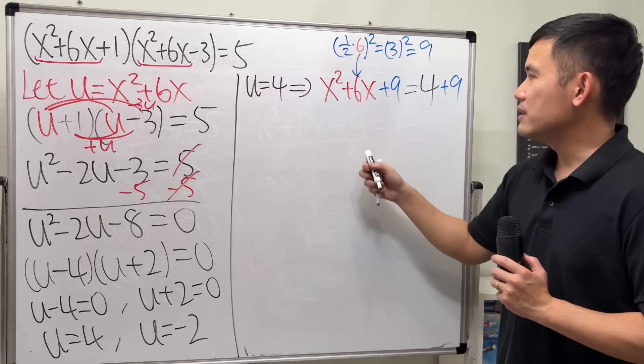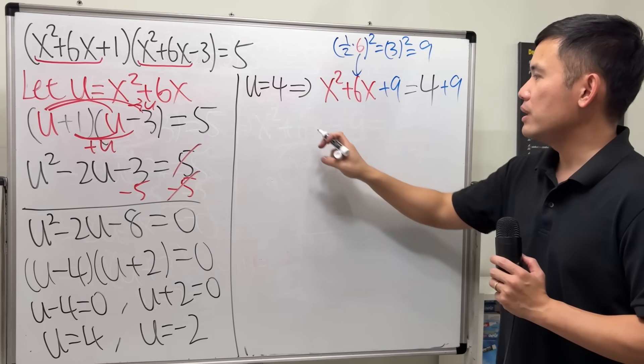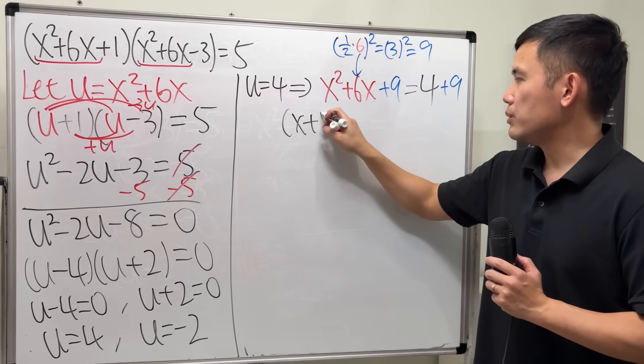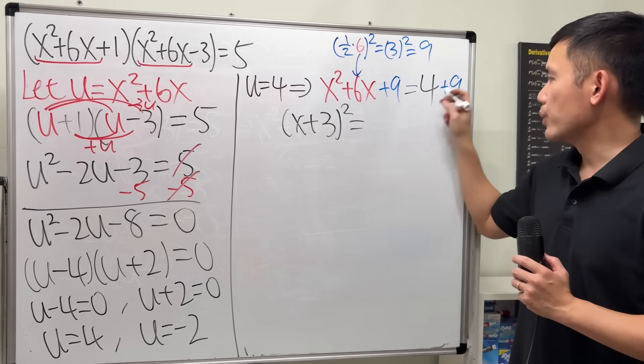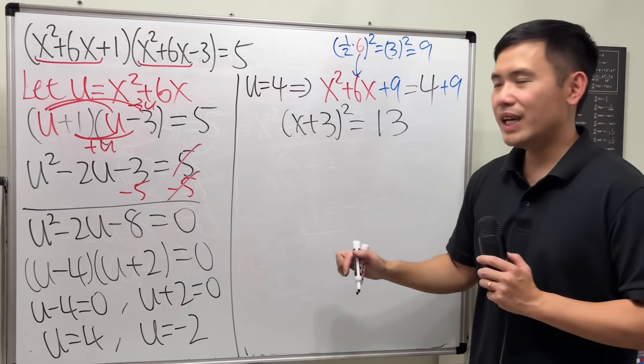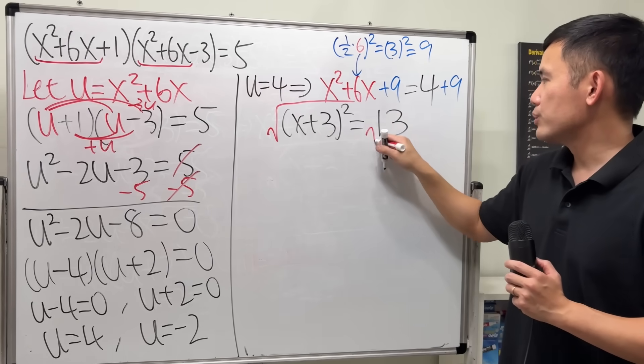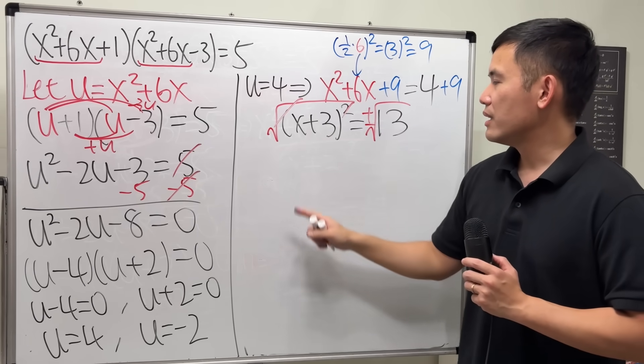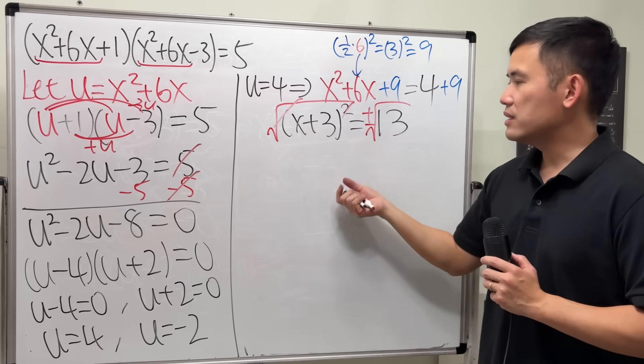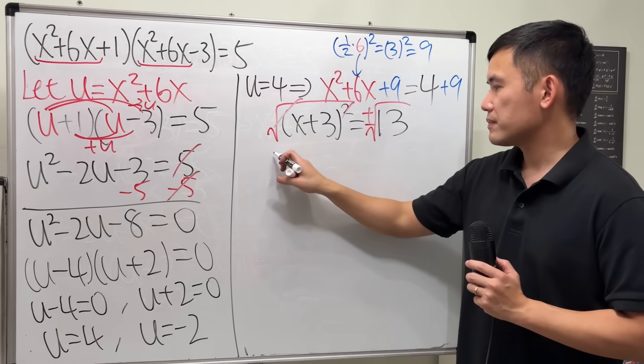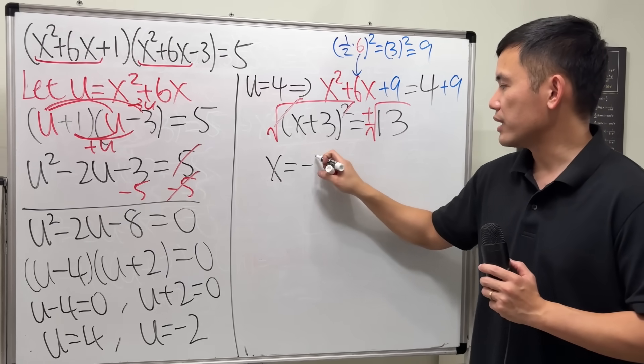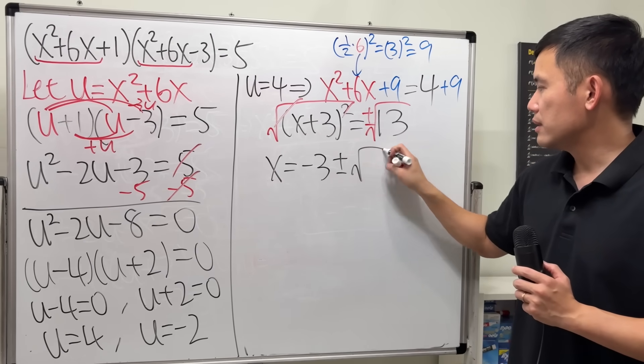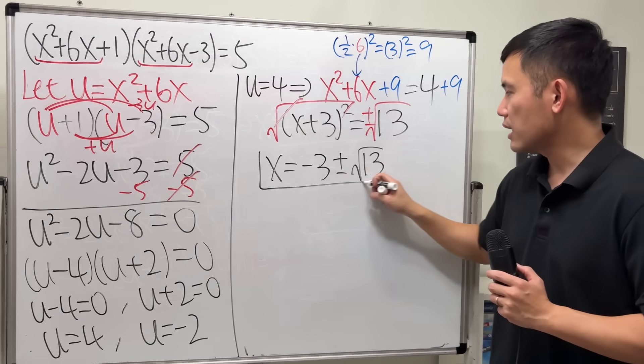So, if you factor this, you get x plus 3 times x plus 3, which is just x plus 3 squared, and that's equal to 13. And we can just take the square roots to both sides, to put a plus or minus. x plus 3 is equal to this, subtract 3 to both sides, we get x is equal to negative 3, plus or minus square root of 13. And we are done.